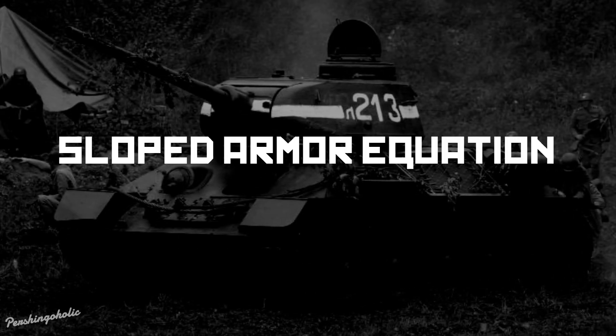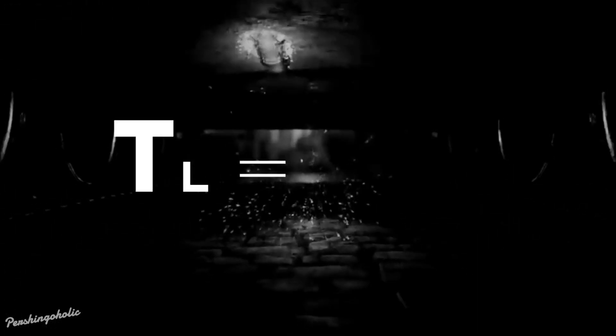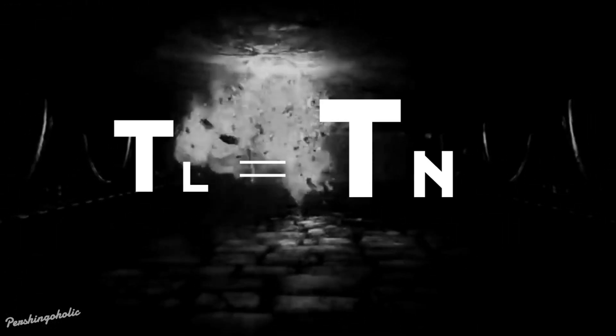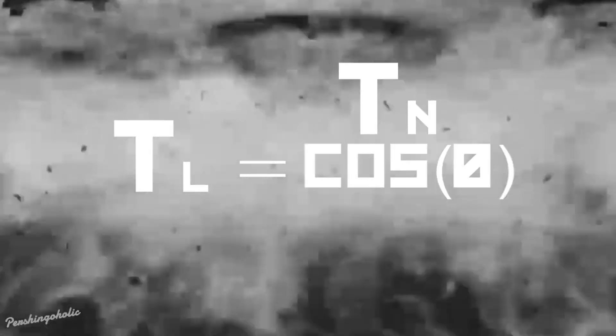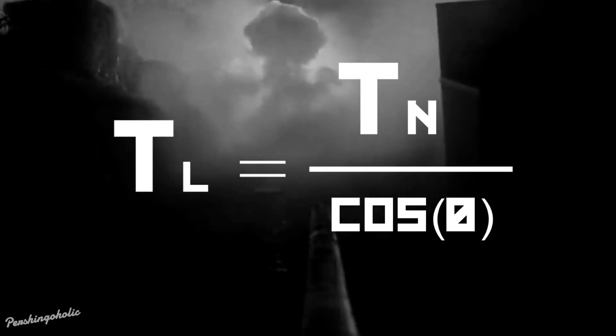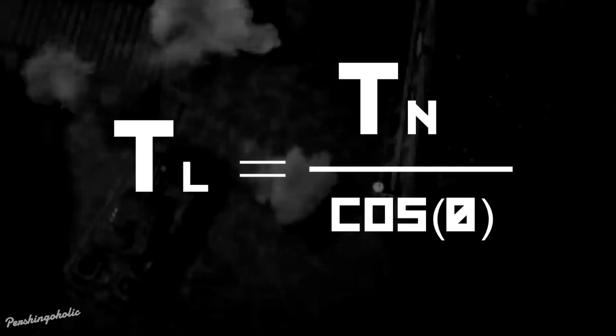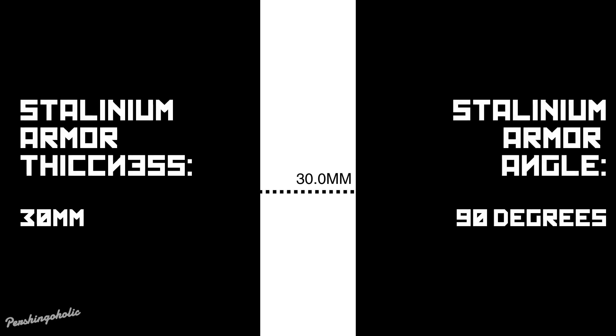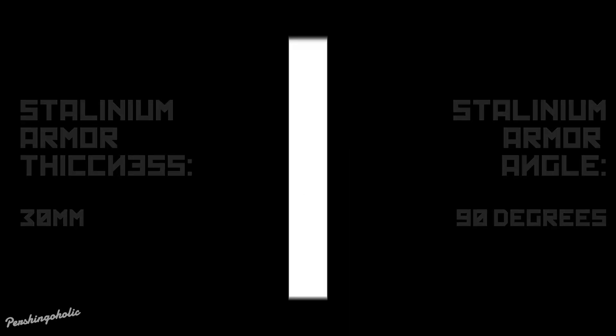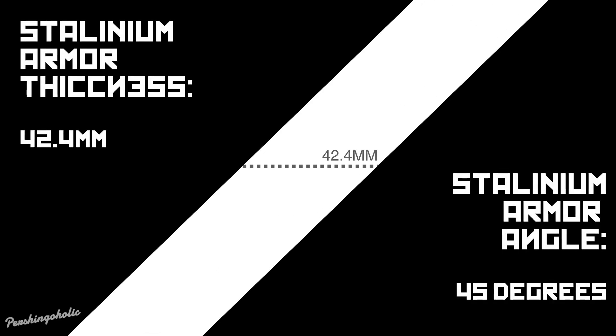The first equation I'd like to talk about is the sloped armor equation. TL represents the final thickness, TN represents the normal thickness, and theta represents the angle of the armor. This equation tells you the effective armor that a tank will have at a certain angle. As you can see in the animation, you would have to go through more material when the flat plate is sloped at 45 degrees rather than standing at a straight 90 degrees.